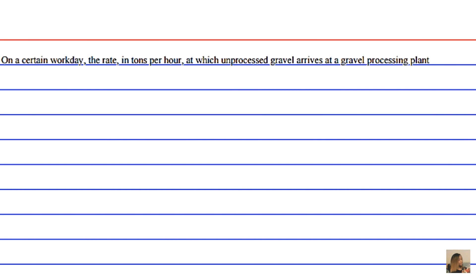On a certain workday, the rate in tons per hour at which unprocessed gravel arrives at a gravel processing plant is modeled by G(t) = 90 + 45cos(t²/18), where t is measured in hours and 0 ≤ t ≤ 8. Note this is a closed interval that includes the endpoints 8 and 0 hours.